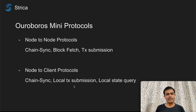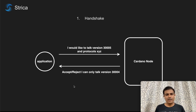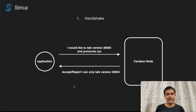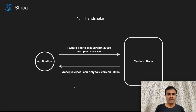Let's take a look at how we can implement the node-to-client chainsync protocol. Due to time constraints, I'll give you an overview of how to implement the chainsync mini protocol. The first step is called handshake, which involves an application initiating a connection with the Cardano node, stating that it would like to talk protocol version 3005 and utilize chainsync, transaction submission, and local state query. The Cardano node will then either accept or reject the connection. This is made possible by multiplexing the protocol.